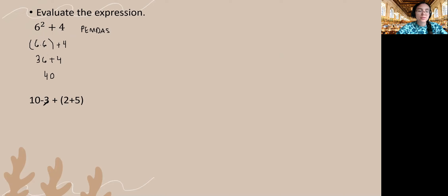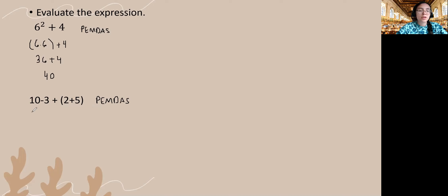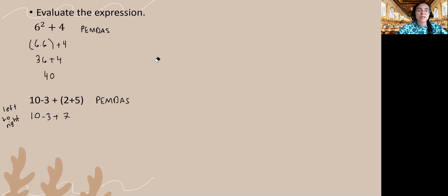Moving on to the next example, we have subtraction, addition, and a quantity within parentheses. So we're going to do the parentheses first according to our order of operations, and then we'll do the addition and subtraction. So I'll bring everything down and evaluate: 2 plus 5 is 7. Now I have subtraction and addition, so I move from left to right. 10 minus 3 gives me 7, bring down the other 7, and 7 plus 7 is 14.